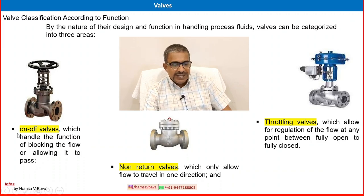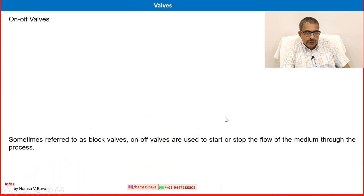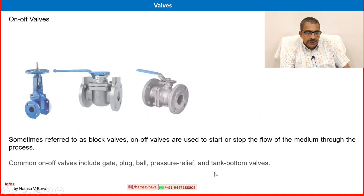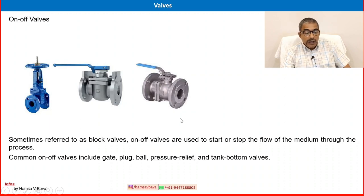We will review each one in detail. On-off valve, non-return valve, and throttling valve — this is the valve classification according to function. Common on-off valves include the gate valve, plug valve, and ball valve. You can differentiate them visually from the pictures shown.